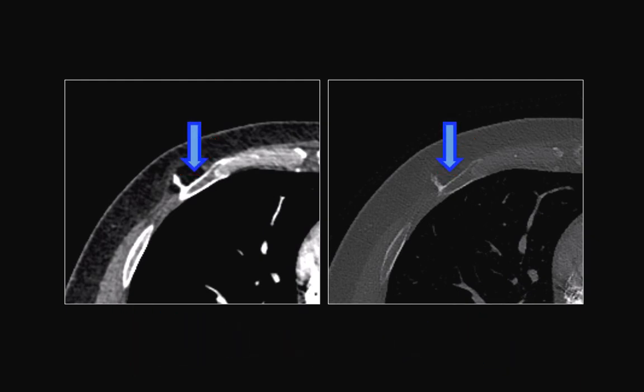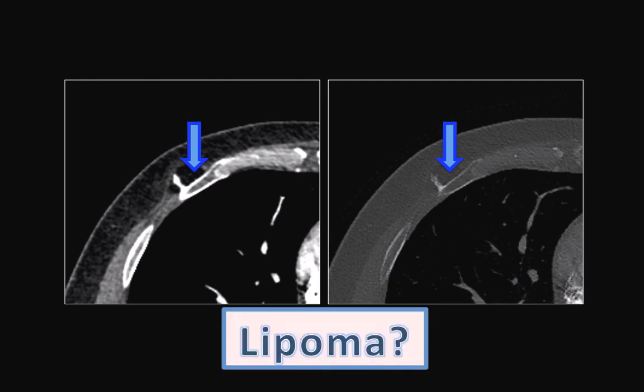Additionally, you see a well-encapsulated lesion of fat attenuation surrounding this bone spur. This could be a lipoma.